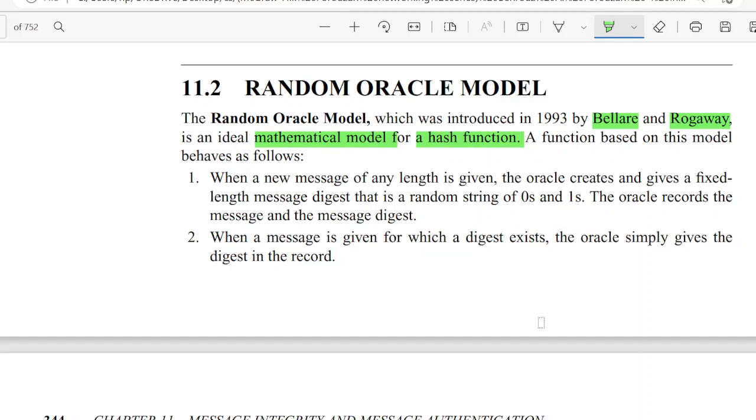A function based on this model behaves on these particular three points. The random oracle model behaves in the sense that when a new message of any length is given to this oracle model, it creates a fixed length message digest.